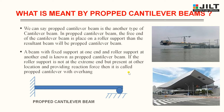Now let us see what is meant by a propped cantilever beam. A propped cantilever beam is another type of cantilever beam. In a propped cantilever beam, the free end of the cantilever is placed on a roller support. So one end is fixed and the other end has a roller support — this is known as a propped cantilever beam. If the roller support is not at the extreme end but present at another location providing a reaction force, it is called a propped cantilever with overhang.